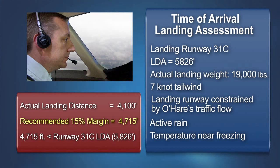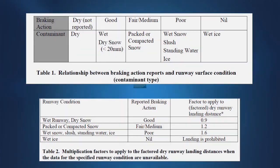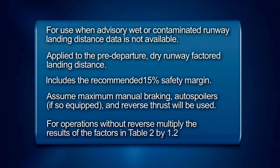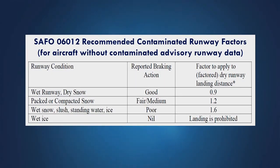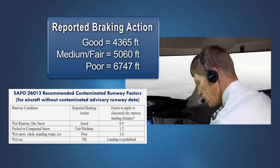Once the actual landing distance is known, SAFO 06012 recommends that a 15% safety margin be added and that the resulting distance be less than the declared landing distance available, unless imminent risk to continued flight makes this landing imperative. For those airplanes where advisory contaminated runway landing distance data is not available, SAFO 06012 provides factors based on the reported runway condition or braking action reports to determine the minimum runway required for landing. These factors are applied to the factored dry runway landing distance used in pre-departure planning and include the recommended 15% safety margin. After this initial assessment is complete, pilots should monitor for deteriorating runway conditions and base their decision to continue on the most conservative assessment of the aircraft's stopping performance.